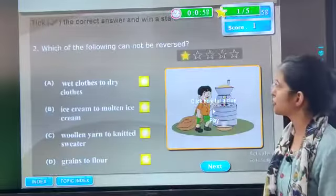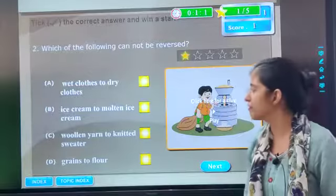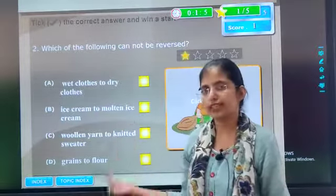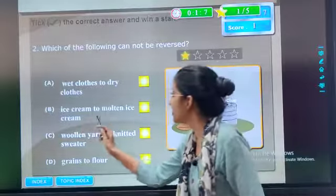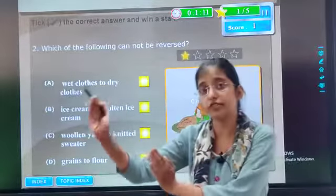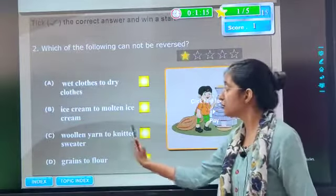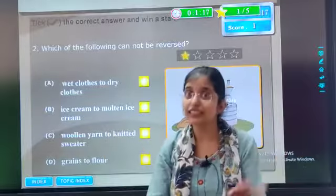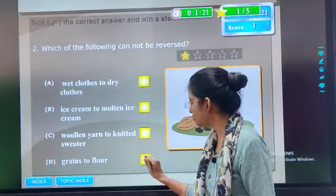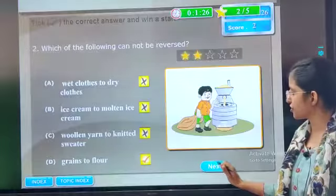Now next question. Which of the following cannot be reversed? Wet clothes to dry clothes. Yes. They can be reversed. Ice cream to molten ice cream. Yes, if we put the molten ice cream back in the fridge, it can be reversed. Woolen yarn to knitted sweater. Yes. This can also be reversed. So our answer is grains to flour.